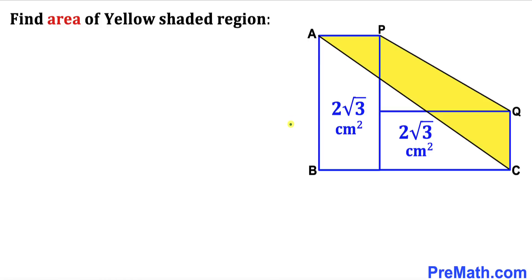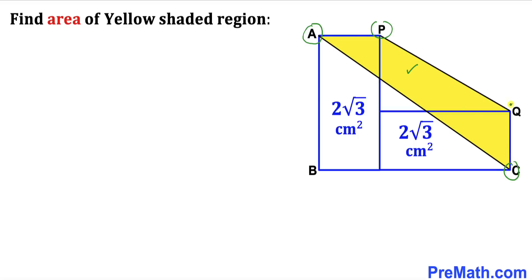Welcome to pre-math. In this video we have got two identical blue rectangles as you can see in this diagram, such that the area of each rectangle is 2 times square root of 3 centimeter square. Moreover, this yellow quadrilateral is formed by connecting points A, C, B, and Q, and now we are going to calculate the area of this yellow shaded region.